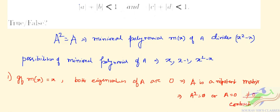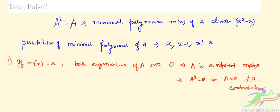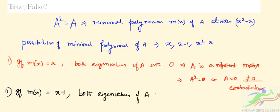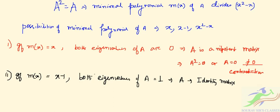Case 2: If the minimal polynomial m(x) = x - 1, then both eigenvalues of A are 1, so A is similar to the identity matrix. When A is the identity matrix, we cannot satisfy the conditions |a| + |b| < 1 and |c| + |d| < 1.